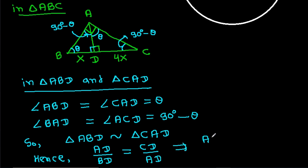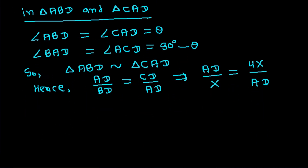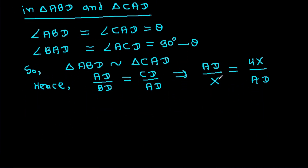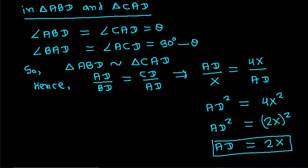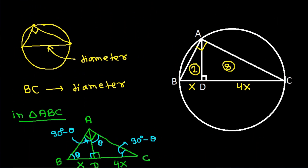From the similarity, AD/BD = CD/AD, that is AD/X = 4X/AD. Cross multiplying gives AD² = 4X², so AD = 2X.